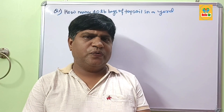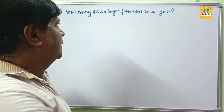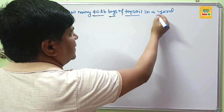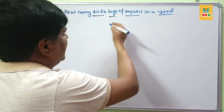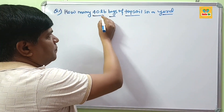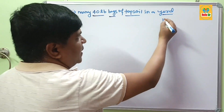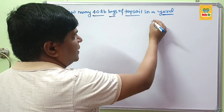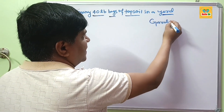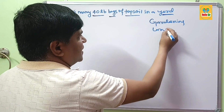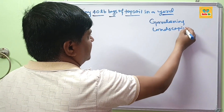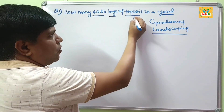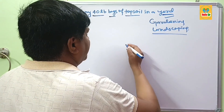Hi guys, in this video we learn about how many 40 lb bags of topsoil are in 1 cubic yard. You have to find out the number of 40 lb bags of topsoil required to make 1 cubic yard. Topsoil is used in gardening and landscaping, and the question is how many 40 lb bags of topsoil are required to make 1 yard.